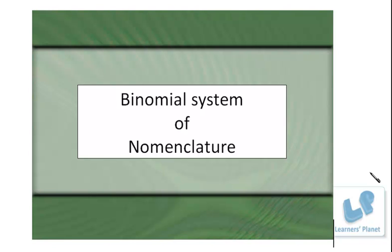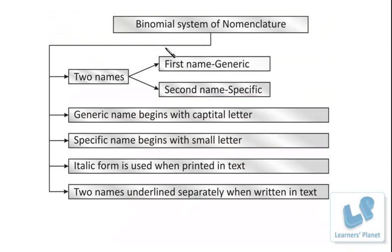In today's session, I am going to discuss what this binomial system actually is. According to this system, the name of any living organism is comprised of two names. Since there are two names, it is known as the binomial system. There is another system known as trinomial nomenclature, which is also accepted and is completely accurate, though it becomes a little bit more complicated.